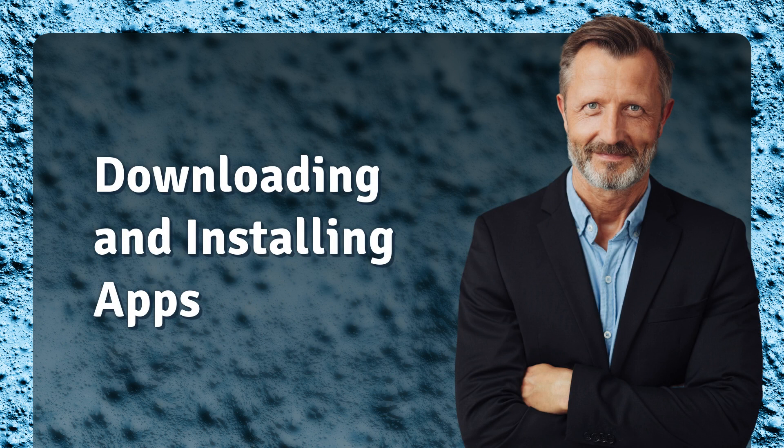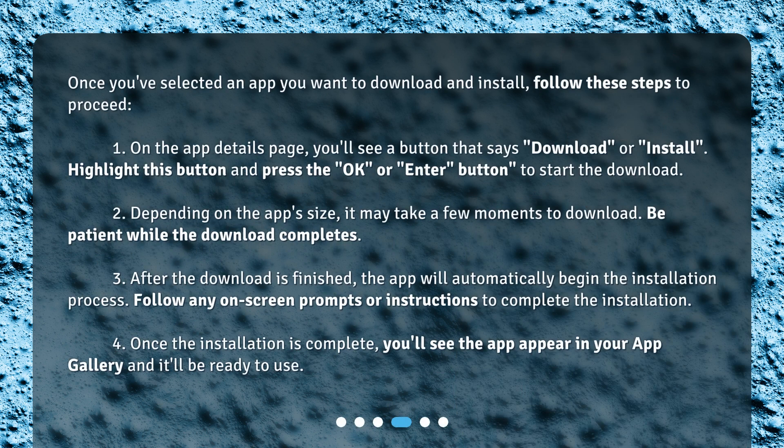Downloading and installing apps. Once you've selected an app you want to download and install, follow these steps to proceed. 1. On the App Details page, you'll see a button that says Download or Install. Highlight this button and press the OK or Enter button to start the download.